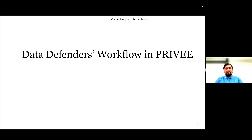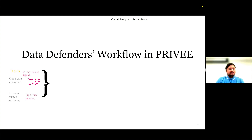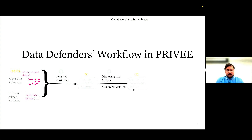Now I will describe the workflow of PV, which we developed after finding such examples and which data defenders can use to emulate our attack strategies and find more such examples. We take open datasets and try to create joinable groups of datasets. From each group, we then compare the joinability risks of each possible pairwise combination, and finally try to identify cases of disclosure at the record level.